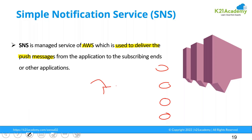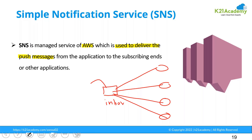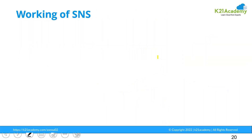You receive a message in your inbox and you push this message to the subscribed endpoints. This is what your SNS service is — Simple Notification Service. It pushes messages to the subscribed endpoints, and those subscribed endpoints could be an email address, a Lambda function, an HTTP request endpoint, or anything. So it is a very useful service by Amazon.